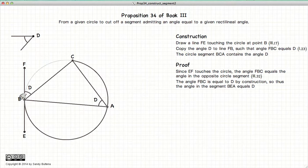And since FBC was constructed to equal D, then this is D and this angle is D, and thus we have proven this proposition that it is possible to construct a circle segment that contains a given angle.